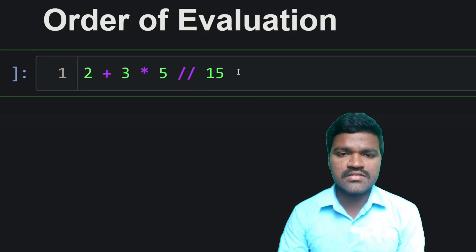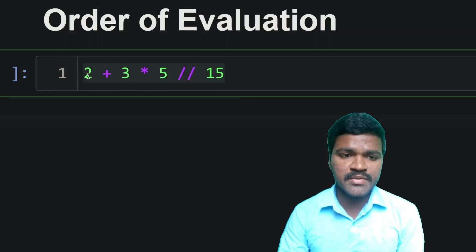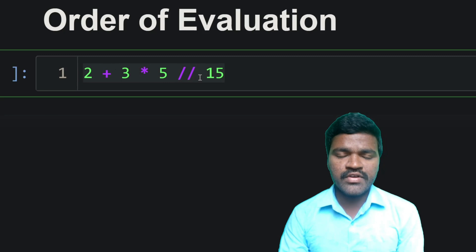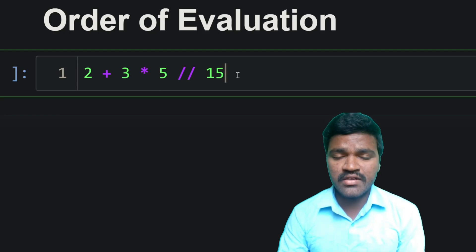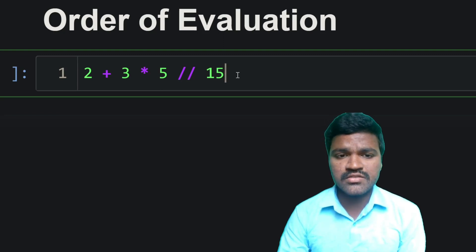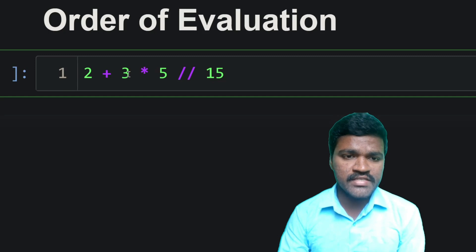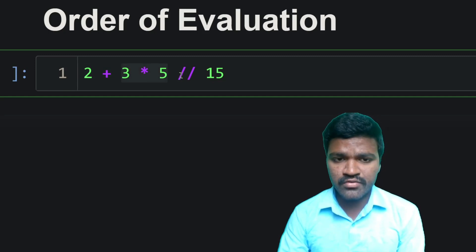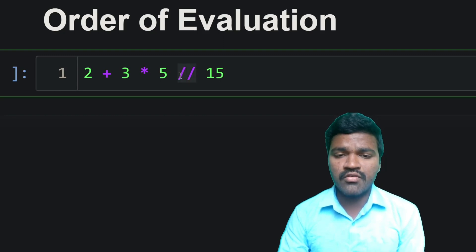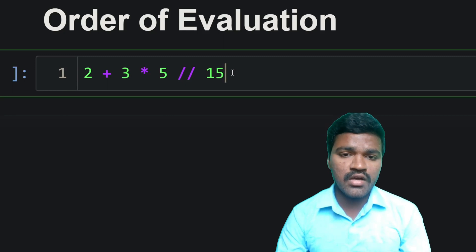Hey! What do you think the answer for this expression? Pause the video for a second, think, and comment in the comment section. If you think the answer for this expression is 1, that is wrong. You may have thought the answer is 1 because 2 plus 3 is 5, 5 into 5 is 25, and 25 with floor division of 15 gives 1 — but that is wrong.